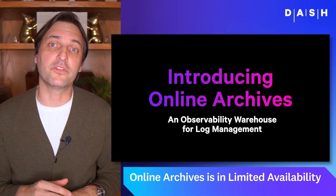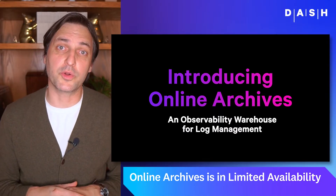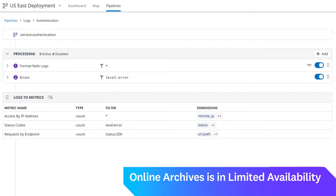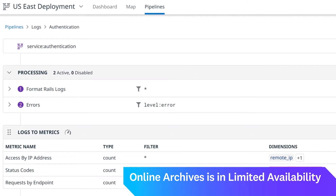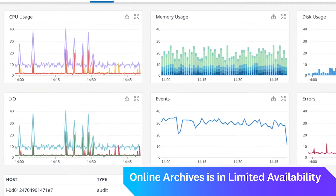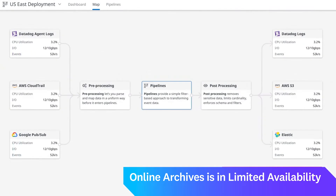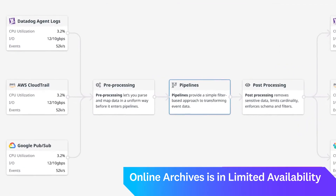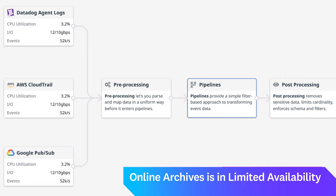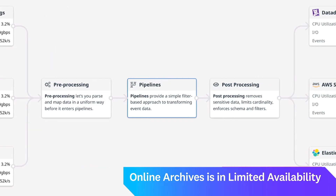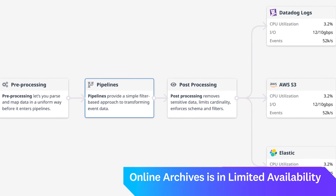Online Archives is a new storage and query tier for Datadog Log Management that fits between indexing and external archives. With Online Archives, you retain all of your logs fully searchable for 15 months at a fraction of the cost of hot indexes.